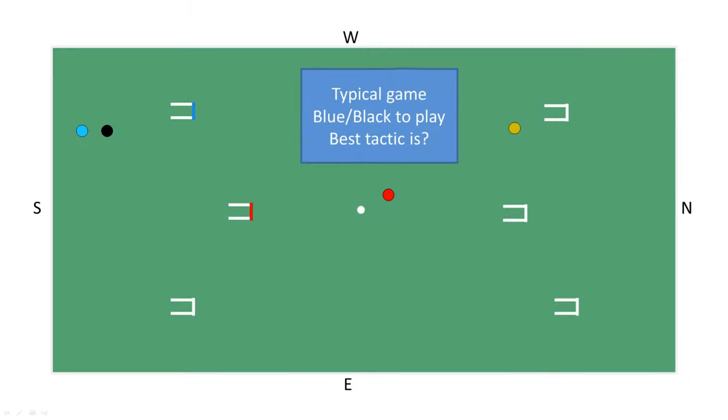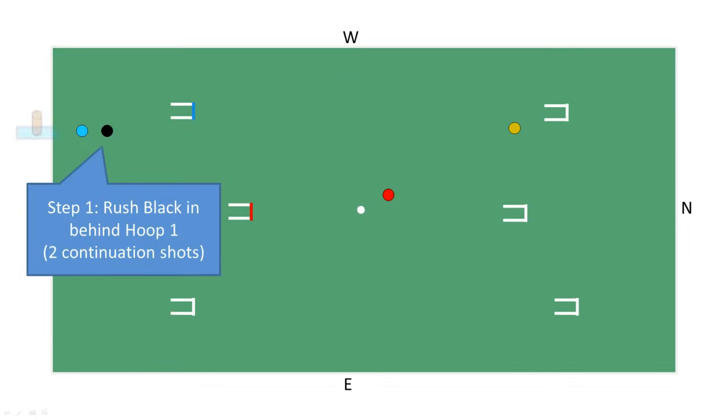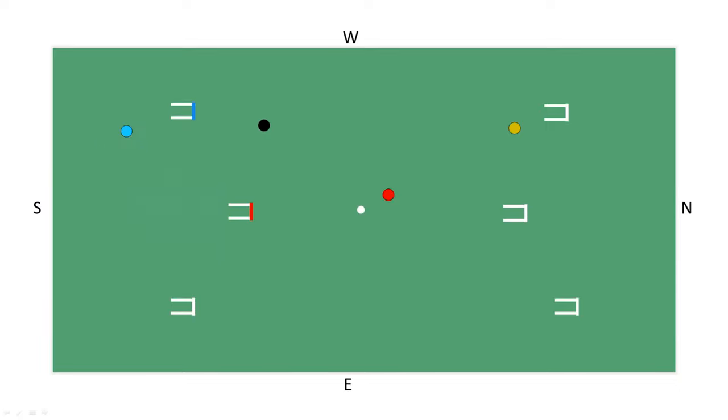Blue first roquets or rushes black behind hoop 1, thus gaining two continuation shots. A ball that is behind a hoop is referred to as being in an escape position. A ball that runs or escapes that hoop can then use the escape ball to gain two continuation shots.